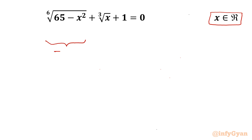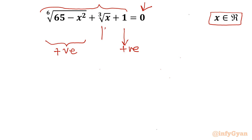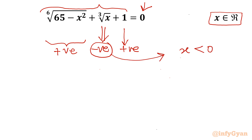For real values of x, the sixth root will always be positive. Plus 1 is a constant — no doubt it is positive. So the summation of these three terms, if it is equal to 0, the conclusion is cube root of x should be negative only. And once cube root x is negative, we can write x should be negative. So only negative x will be accepted for real solutions.